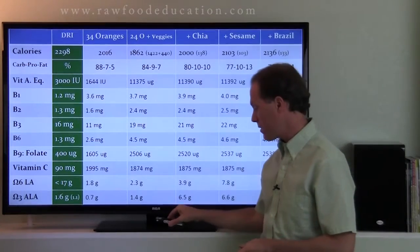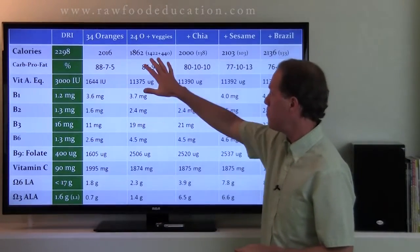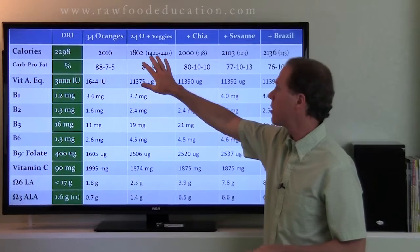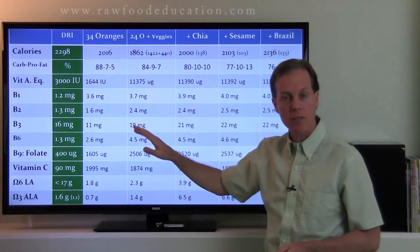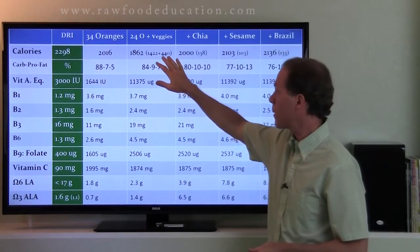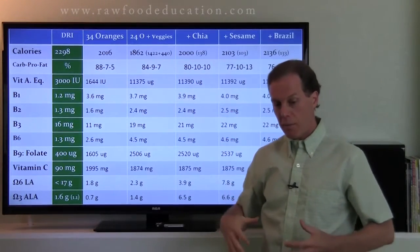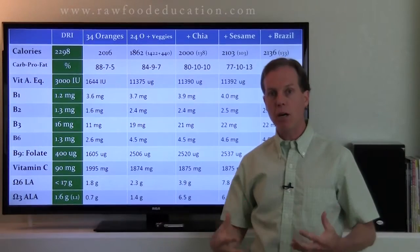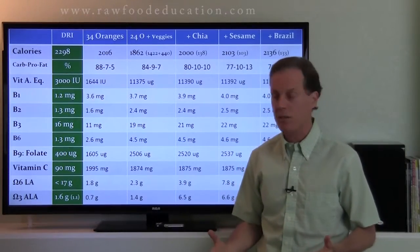So once again, like I said last time, we have a diet based on fruit. The majority of the calories, 1,400 calories, come from fruit. Another 400 calories or so come from vegetables. And by the way, that's about as much vegetable material as I can get in in a day, reasonably.